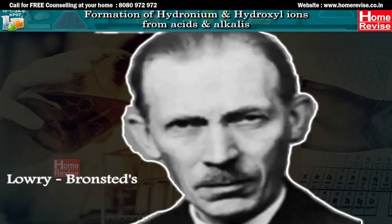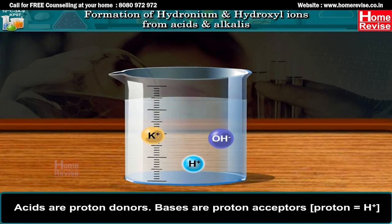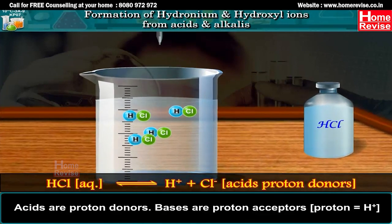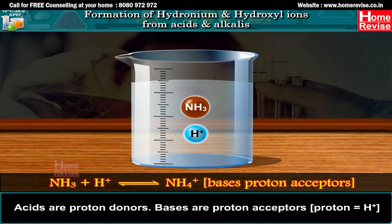Lowry-Brønsted Theory: Acids are proton donors; bases are proton acceptors. Proton means H+ ions. HCl, which is a proton donor, dissociates to give H+ plus Cl-. Whereas NH3 is a proton acceptor — it accepts H+, giving NH4+ cation.